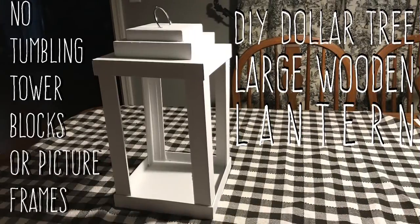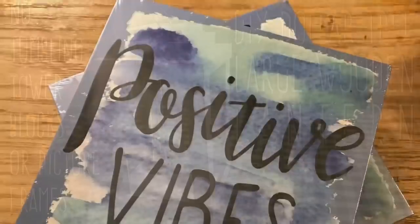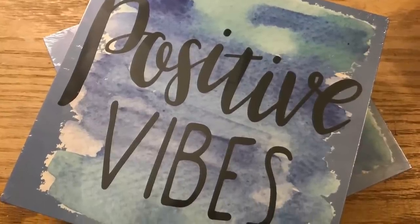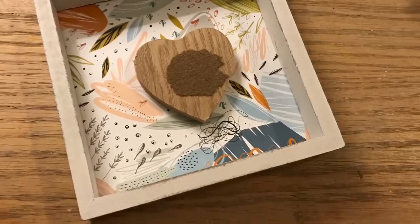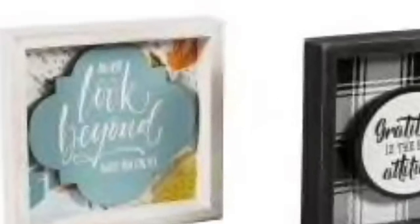Hi everybody, welcome back to my channel. Today we're going to do a DIY Dollar Tree really large wooden lantern with no tumbling blocks and no picture frames. We're going to use two 8x8 box arts with no decals on them, and then we're going to use one of these small box arts.